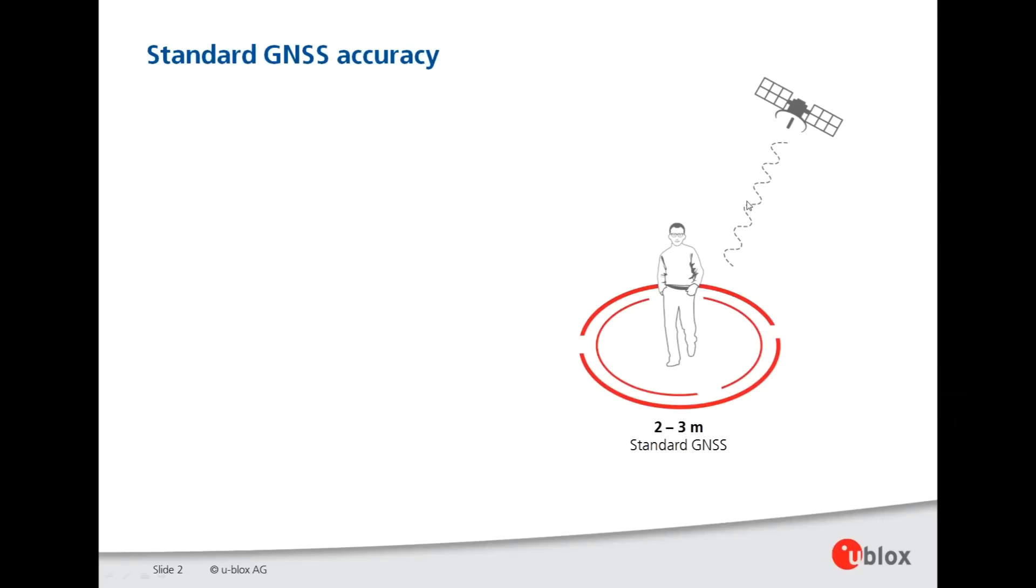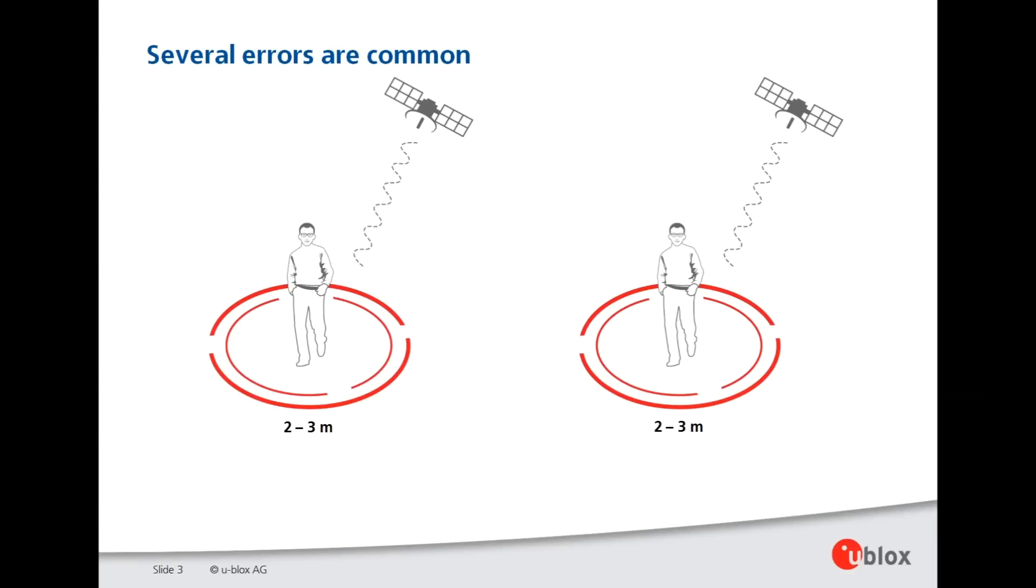Using GPS, the position accuracy a user gets is typically a few meters. Now it turns out that most of the errors are going to be the same for two users close to each other.